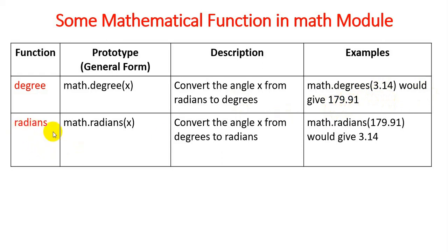Next, the radians prototype is math.radians(x). Convert the angle x from degrees to radians. When you pass math.radians(179.91) would give 3.14.